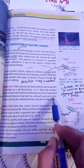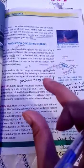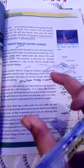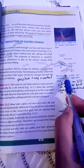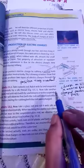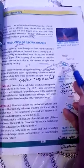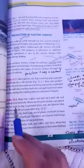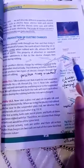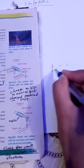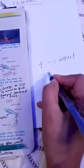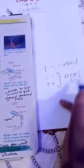We observe that both rods repel each other. This means that during rubbing, both rods were charged with the same type of charge — either both positive or both negative. Same charges repel each other. If one is positive and the other is positive, or both negative, they repel. Different charges attract; same charges repel.